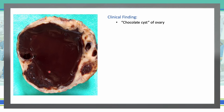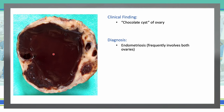Chocolate cysts of the ovary are non-cancerous, fluid-filled cysts that typically form deep within the ovaries. They are called chocolate cysts because of their brown, tar-colored appearance — something that looks like melted chocolate, but it is old accumulated blood. They are also called ovarian endometriomas. We see them in endometriosis, and frequently they involve both ovaries.